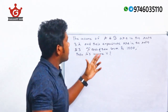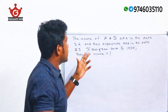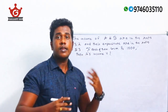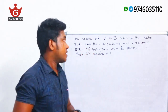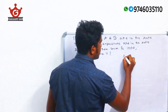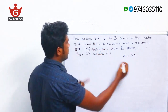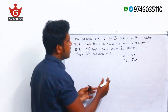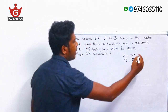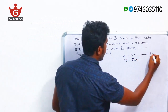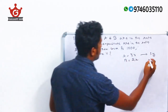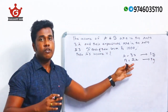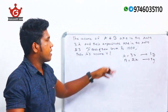Next question: The income of A and B are in the ratio 3:2 and their expenditures are in the ratio 5:3. Assuming income multiplier as X and expenditure multiplier as Y, A's income is 3X, B's income is 2X, A's expenditure is 5Y, and B's expenditure is 3Y.